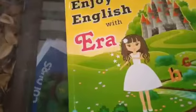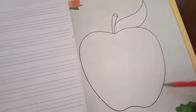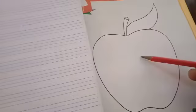And in this book, in your second book, second English book, Enjoy English with Ira, you have to fill the color in this Apple. A, A, Apple. So you have to color this Apple.